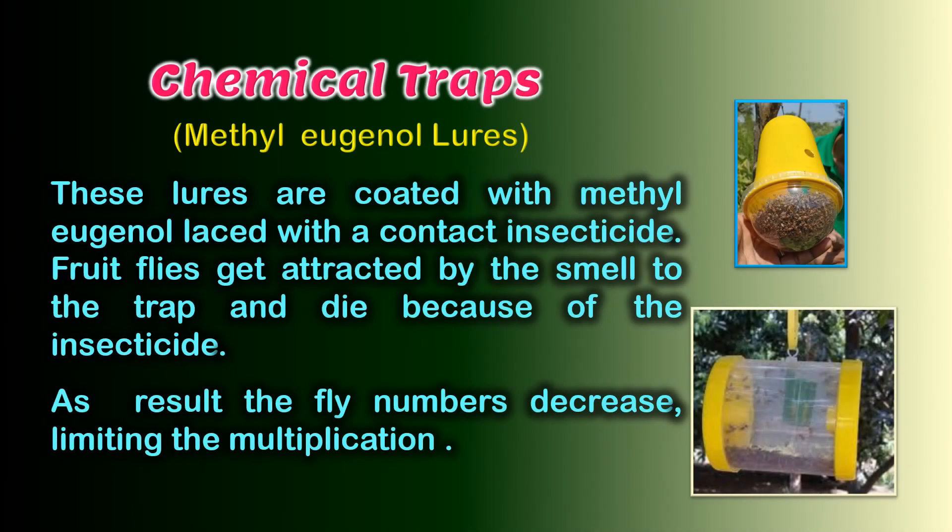These lures are coated with methyl eugenol laced with a contact insecticide. Fruit flies get attracted by the smell to the trap and die because of the insecticide. As a result, fly numbers decrease, limiting the multiplication.